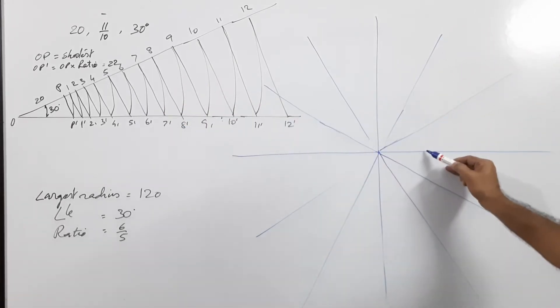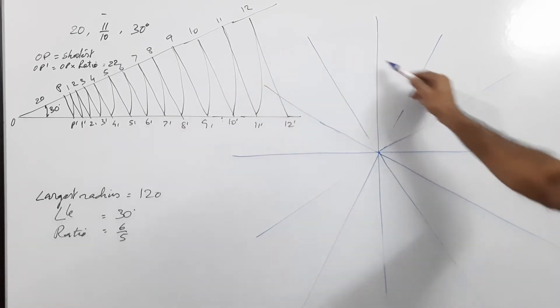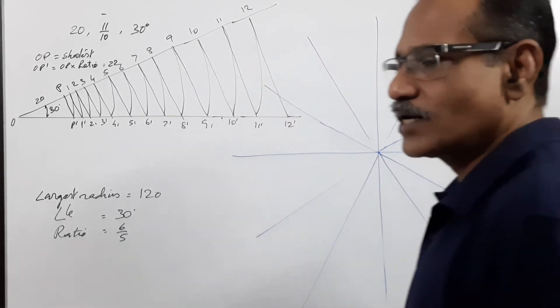OP is marked on this line, O1 is marked on this, and so on. That is how you draw the logarithmic spiral.